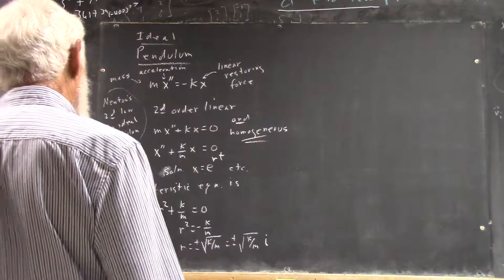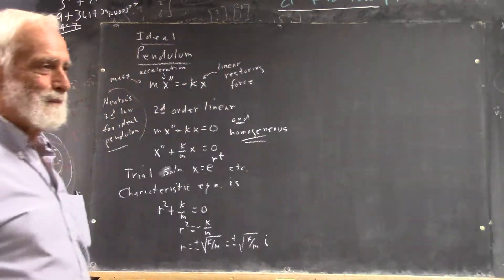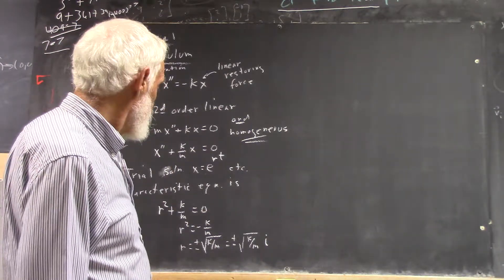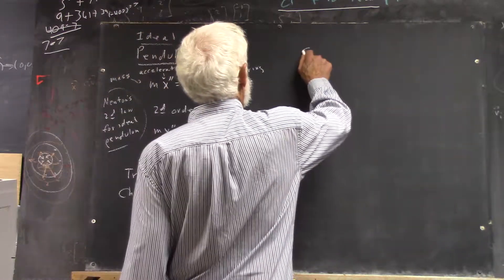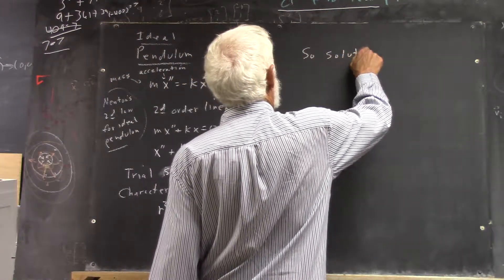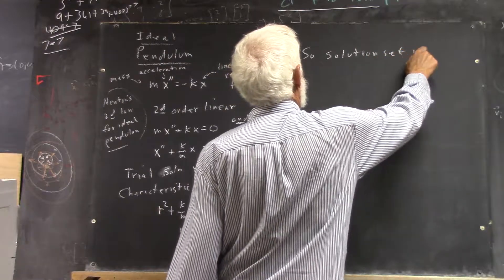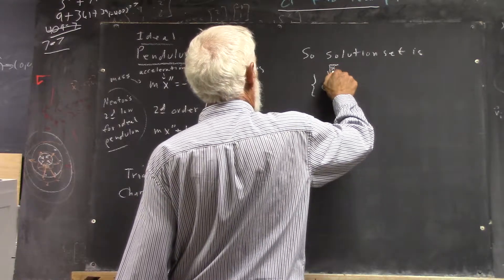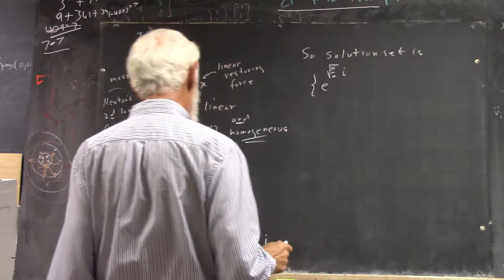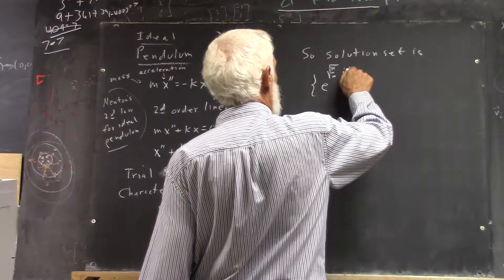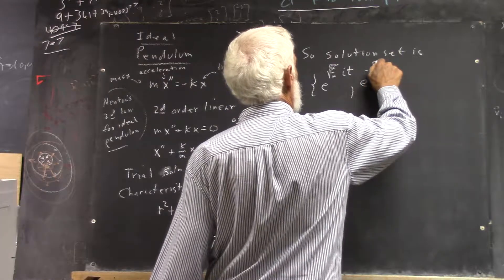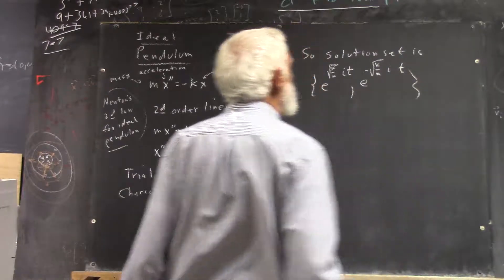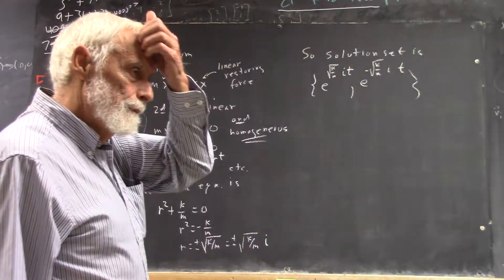We could plug that into the quadratic formula. But since we don't have an r term in here, we could just say, so, r squared is negative k over m. And r equals plus or minus the square root of k over m, which is plus or minus the square root of k over m times i. And that's not totally unfamiliar. Go back and review algebra one. Yeah, review complex numbers and stuff.